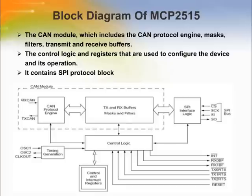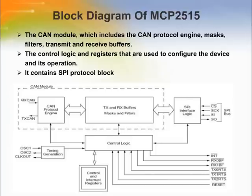This is the block diagram of the CAN controller. The CAN module handles all functions for receiving and transmitting messages on the CAN bus. Messages are transmitted by first loading the appropriate message buffer and control registers. Transmission is initiated by using control register bits via the SPI interface or by using the transmit enable pins. The control logic block controls the setup and operation of the MCP2515 by interfacing to the other blocks in order to pass information and control. Interrupt pins are provided to allow greater system flexibility. The MCU interfaces to the device via the SPI interface. Writing to and reading from all registers is accomplished using standard SPI read and write commands in addition to specialized SPI commands.